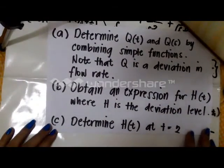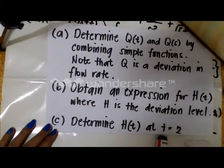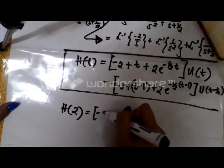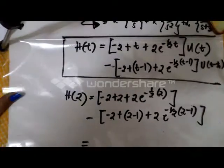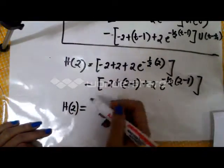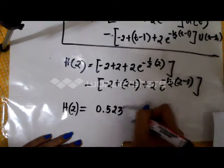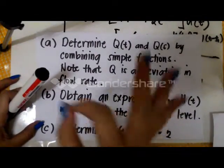Task B is completed. Now let us determine H(t) at t equal to 2 by substituting t = 2 into the formula: H(2) = (−2 + 2 + 2e^(−1)) minus (−2 + 2 − 1 + 2e^(−(1/2)(1))). Using the calculator, H(2) is equal to 0.523. We have completed all the tasks required and I hope you find this helpful. Thank you.